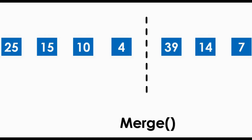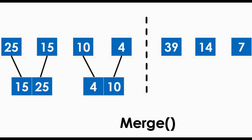In this stage, we sort the individual array list values and combine them using the Merge function. The values are sorted according to their sizes — for example, 25 and 15 will be merged and combined into 15 and 25 as a separate array list. The same with 10 and 4 — they will be combined using the Merge function into one array list as 4 and 10, since 15 is less than 25, and 4 is less than 10.